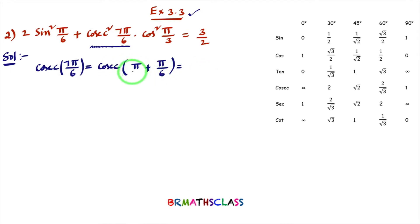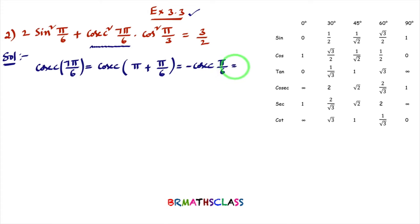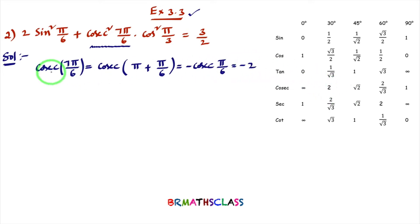Since π is present, the function remains the same — cosec(7π/6) = cosec(π + π/6). The form π + θ lies in the third quadrant, where cosec is negative. So cosec(π + θ) = −cosec θ. Thus cosec(7π/6) = −cosec(π/6) = −cosec 30°. Since cosec 30° = 2, we get cosec(7π/6) = −2.